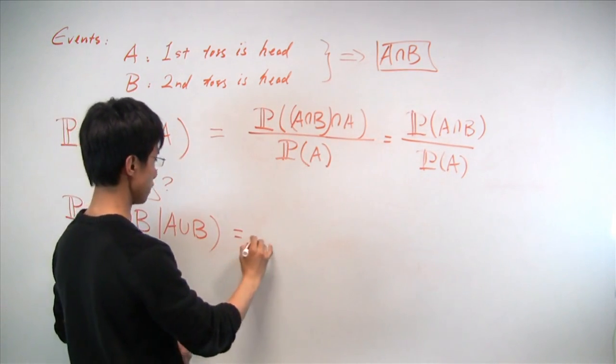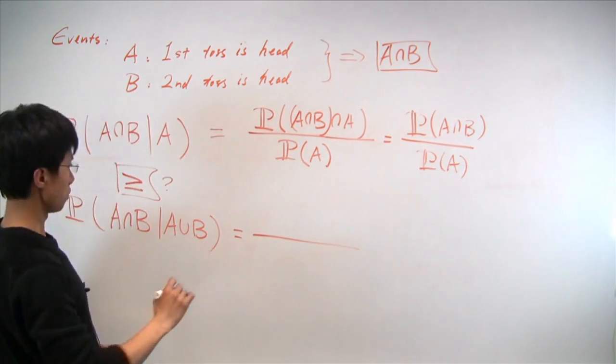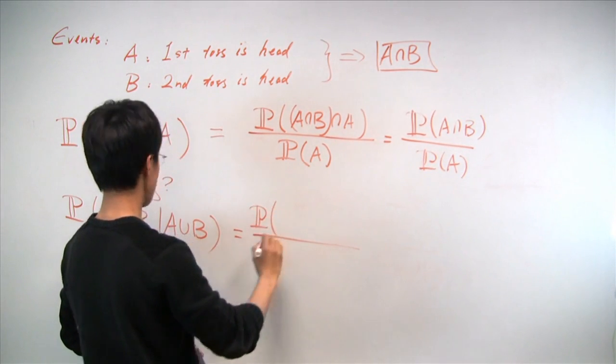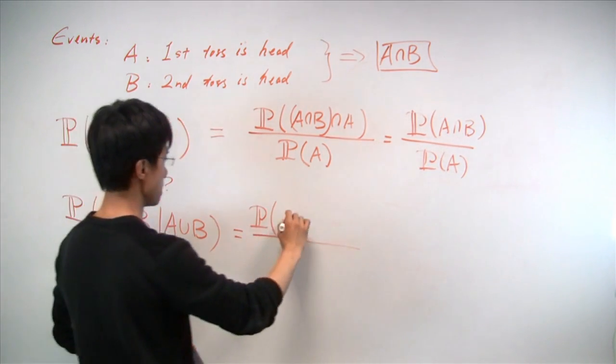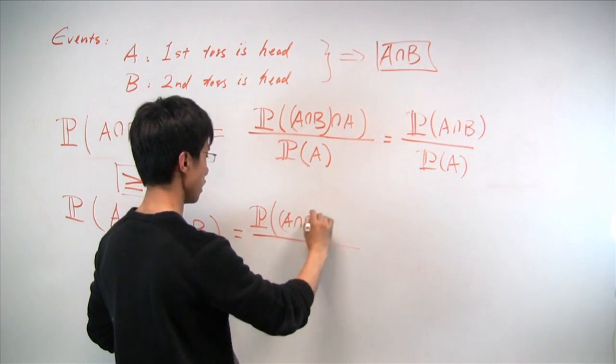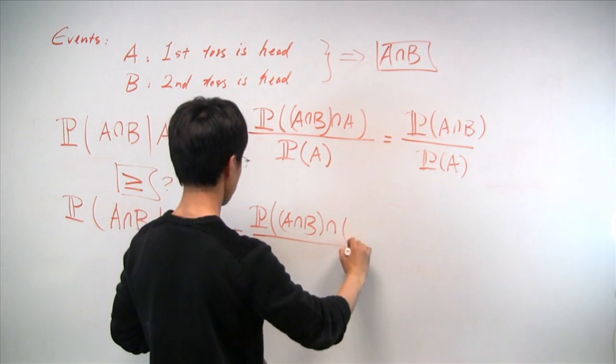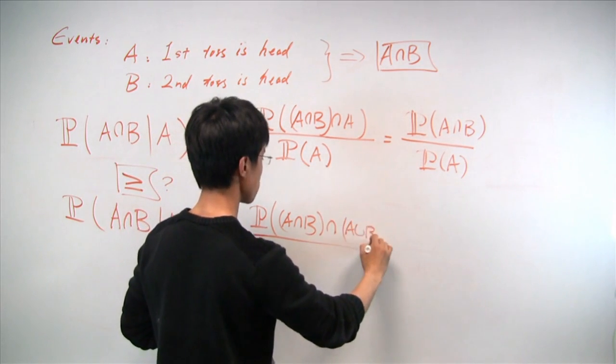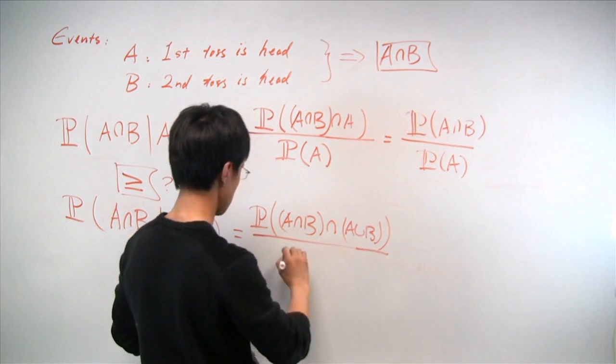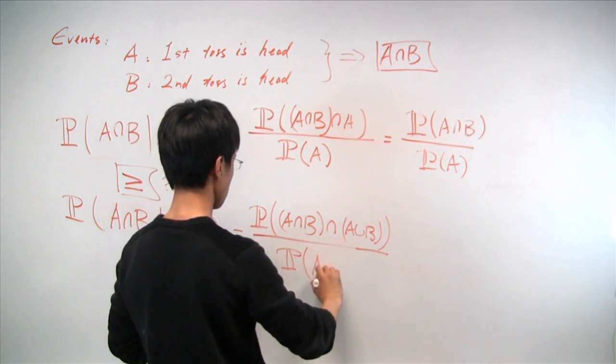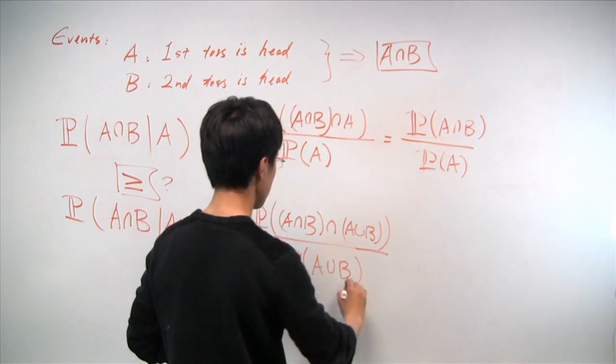Let's do the same thing for the second quantity here. We have, on the top, probability of A and B intersection the event A union B. And on the bottom, probability of the event A union B.